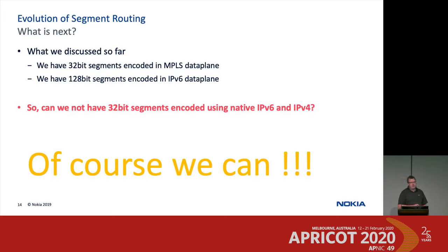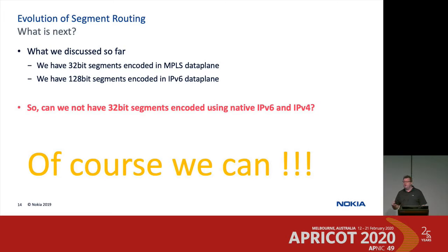So we have 32-bit SIDs over MPLS, and 128-bit SIDs over IPv6. The overhead tax in the 128-bit SIDs is not negligible, and every bit on the wire costs money as an operator. The question I often get is: can we not use 32-bit SIDs over a native IPv4 or native IPv6 backbone environment, and by doing that reduce the overhead?